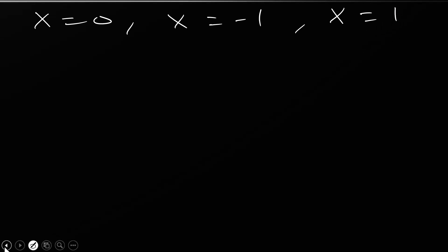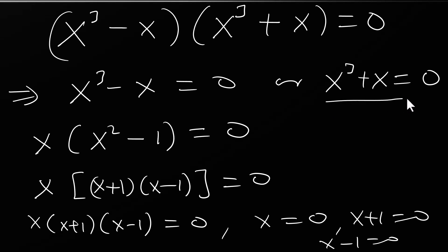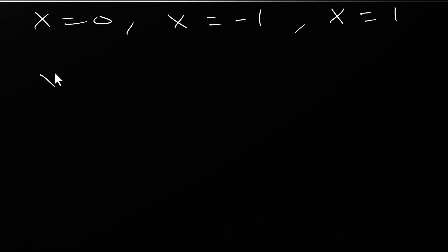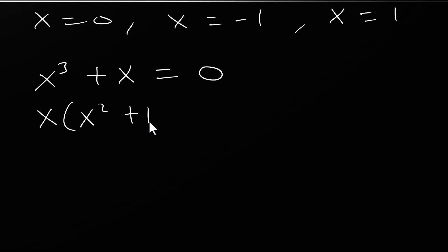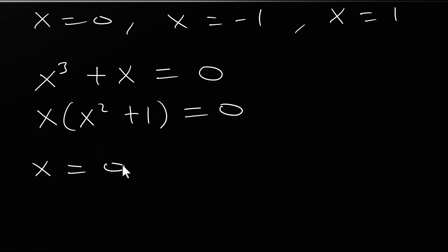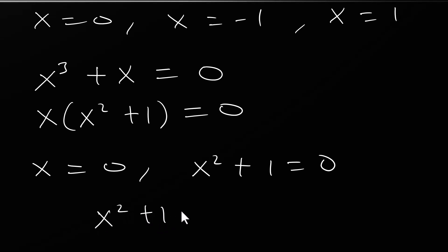Now let's look at the other side: x cubed plus x equals zero. We can take x out here, giving x(x squared plus 1) equals zero. So we have x equals zero, or x squared plus 1 equals zero.